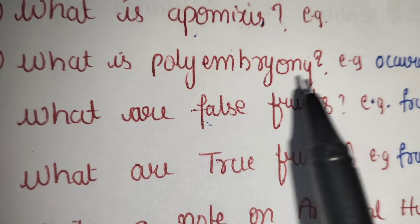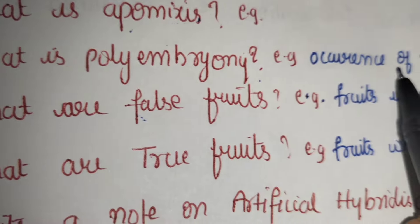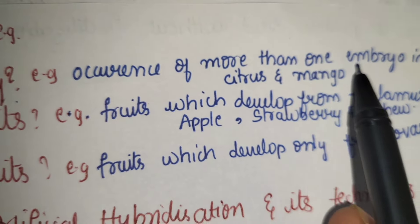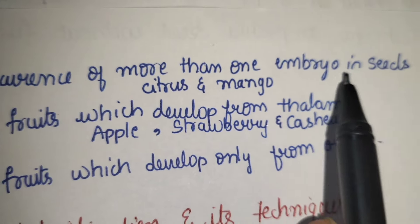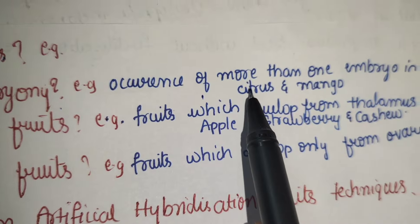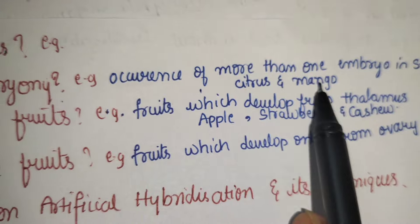What is polyembryony? Occurrence of more than one embryo in a seed is called polyembryony. Example: citrus and mango.